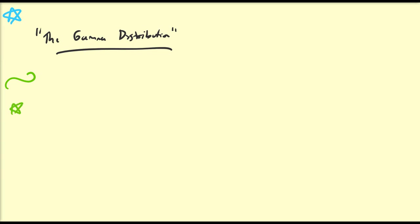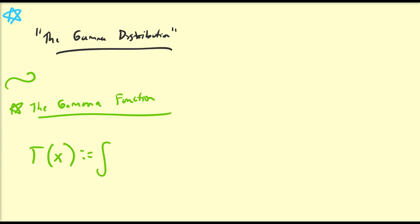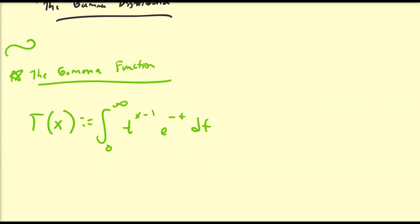Before we get into the discussion of the gamma distribution, I'm going to introduce the gamma function. Unless you've taken an integral calculus sequence, you may not be familiar with this function. The gamma function of variable x is defined to be equal to the integral from 0 to infinity of t to the power x minus 1, times e to the minus t, dt. One important property is how it relates to the factorial.